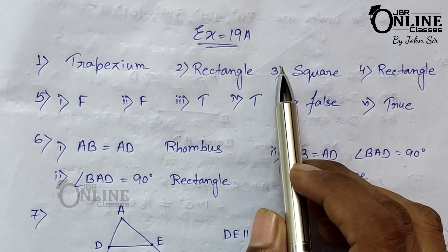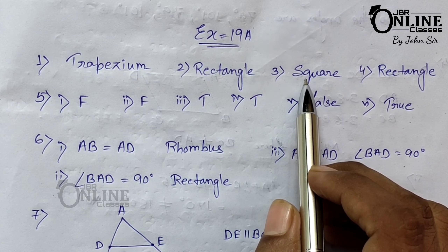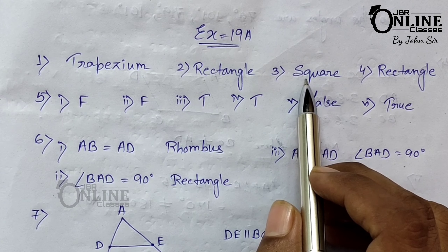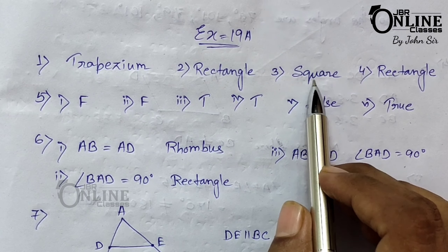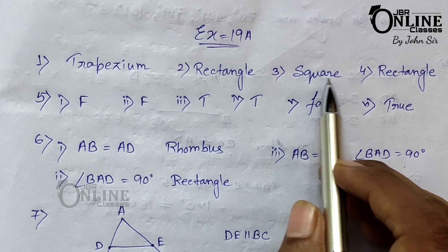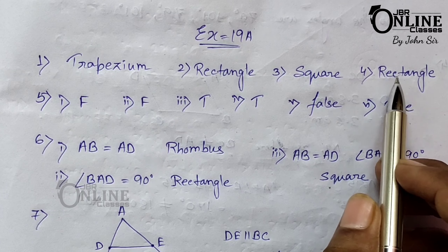Number three: what would you call a figure having equal sides? A square or rhombus. The next condition is opposite sides parallel and angles at the corners are right angles. In a square the angles are always right angles, but in a rhombus there are no right angles, so the answer is square.